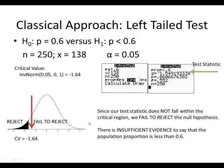That means there is insufficient evidence to say that the population proportion is less than 0.6. When doing our interpretation, we're always referring to the alternative hypothesis.